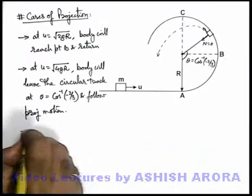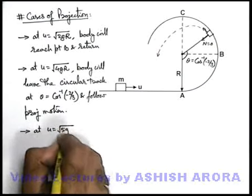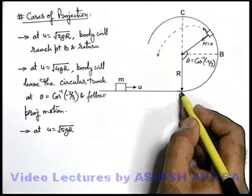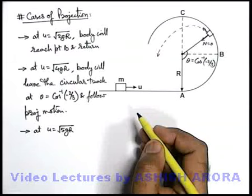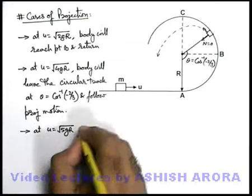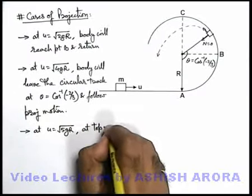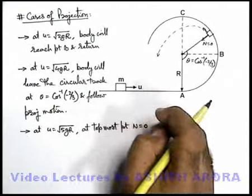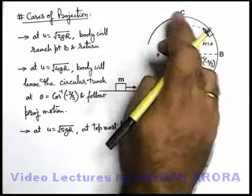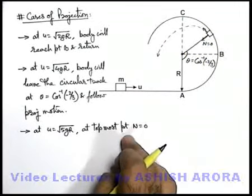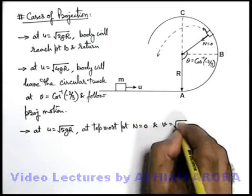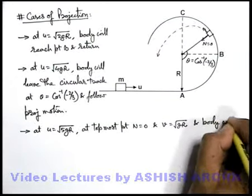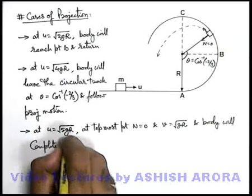If we talk about the case when u equals √(5gr), in case of a simple pendulum √(5gr) is the minimum required speed to complete the circular track. So at u equal to √(5gr), at the topmost point N becomes zero, because this was the condition to complete the circle. The speed at the top can be written directly as √(gr), and the body will complete the circular track.